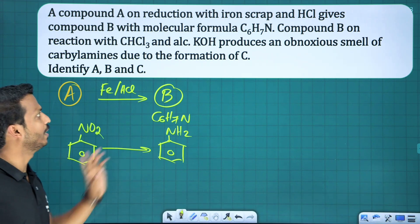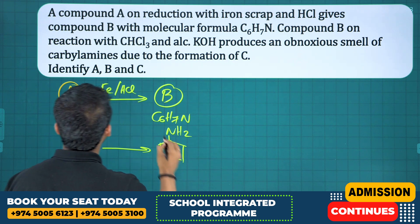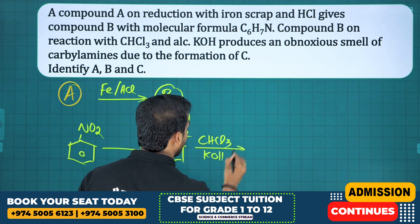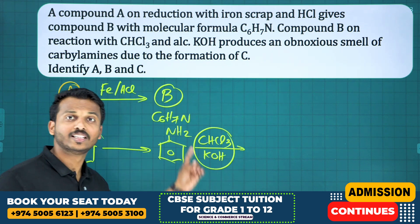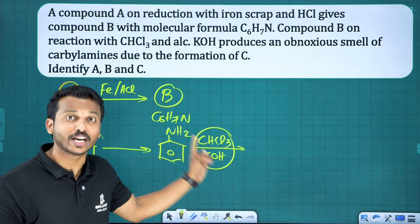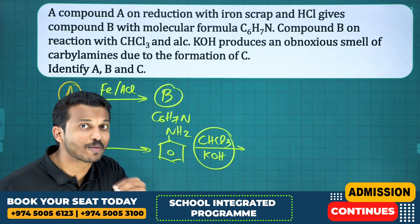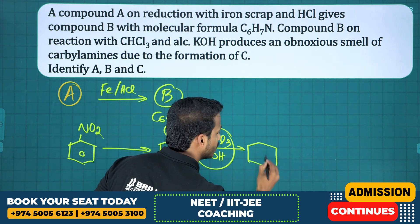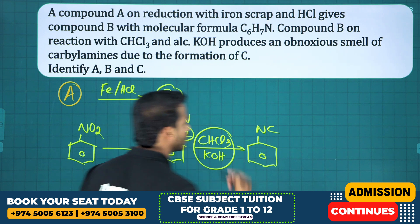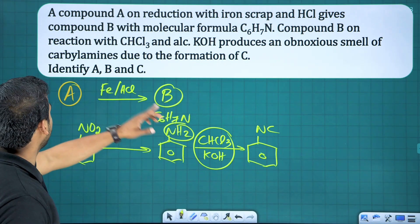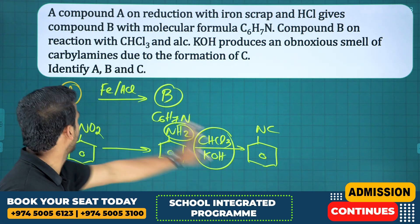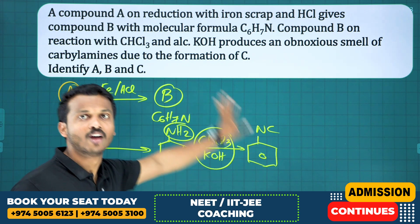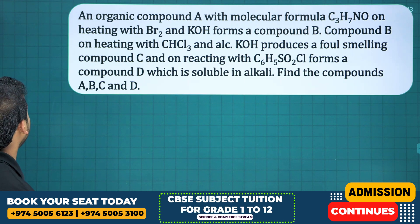Compound B on reaction with chloroform and KOH — this is the carbylamine test (isocyanide test), which produces a false smell. The NH2 becomes NC (isocyanide). So phenyl isocyanide is compound C. Summary: A is nitrobenzene, B is aniline, C is phenyl isocyanate (phenyl isocyanide).